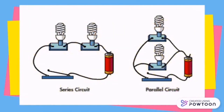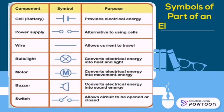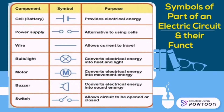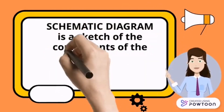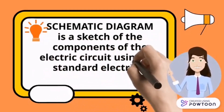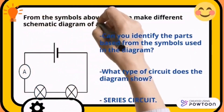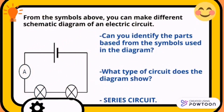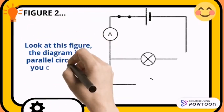Series circuit and parallel circuit are the two types of electric circuits. These are the symbols of parts of an electric circuit and their functions. A schematic diagram is a sketch of the components of the electric circuit using standard electrical symbols. From the symbols of the bulb, you can make different schematic diagrams of an electric circuit. Look at this figure — the diagram is a parallel circuit. As you can see, the wires are connected to each of the bulbs.